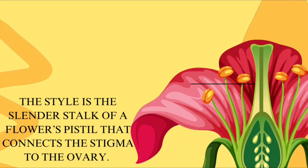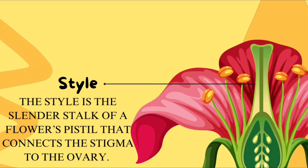This part of a flower is called style. The style is the slender stalk of a flower's pistil that connects the stigma to the ovary.